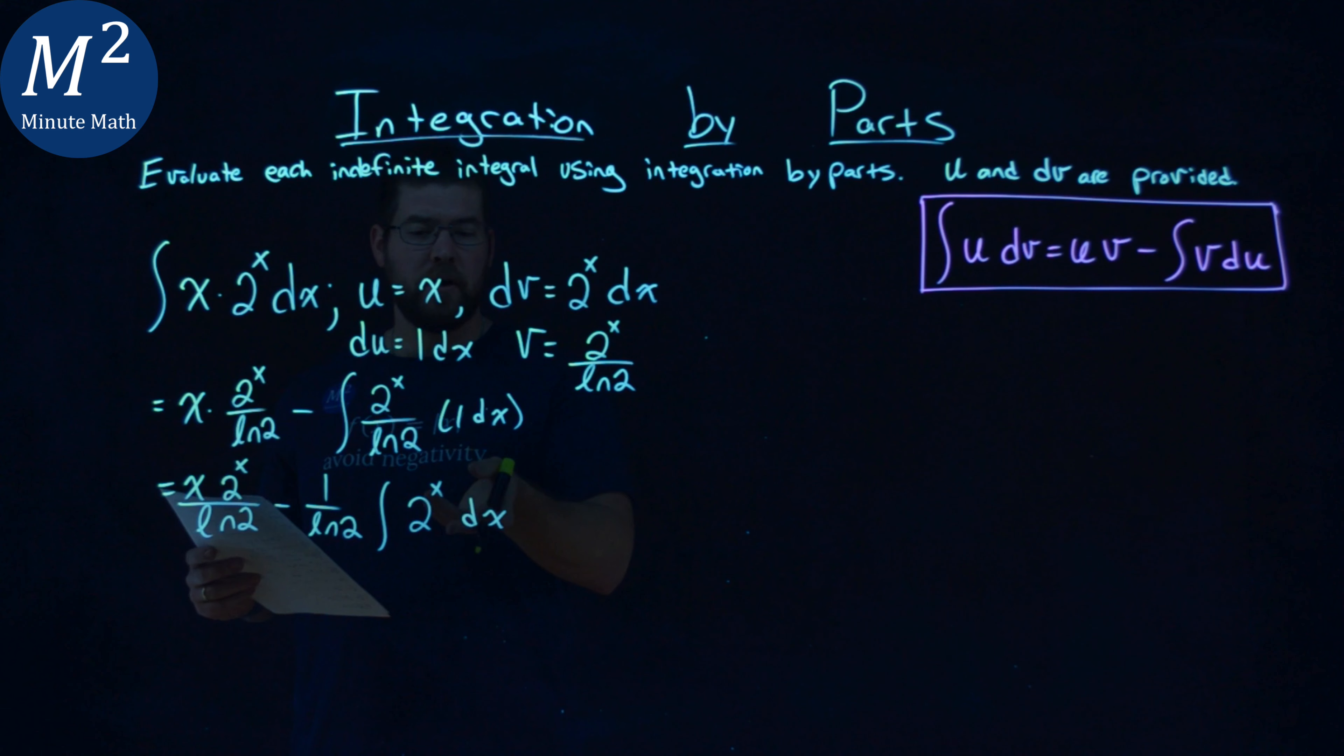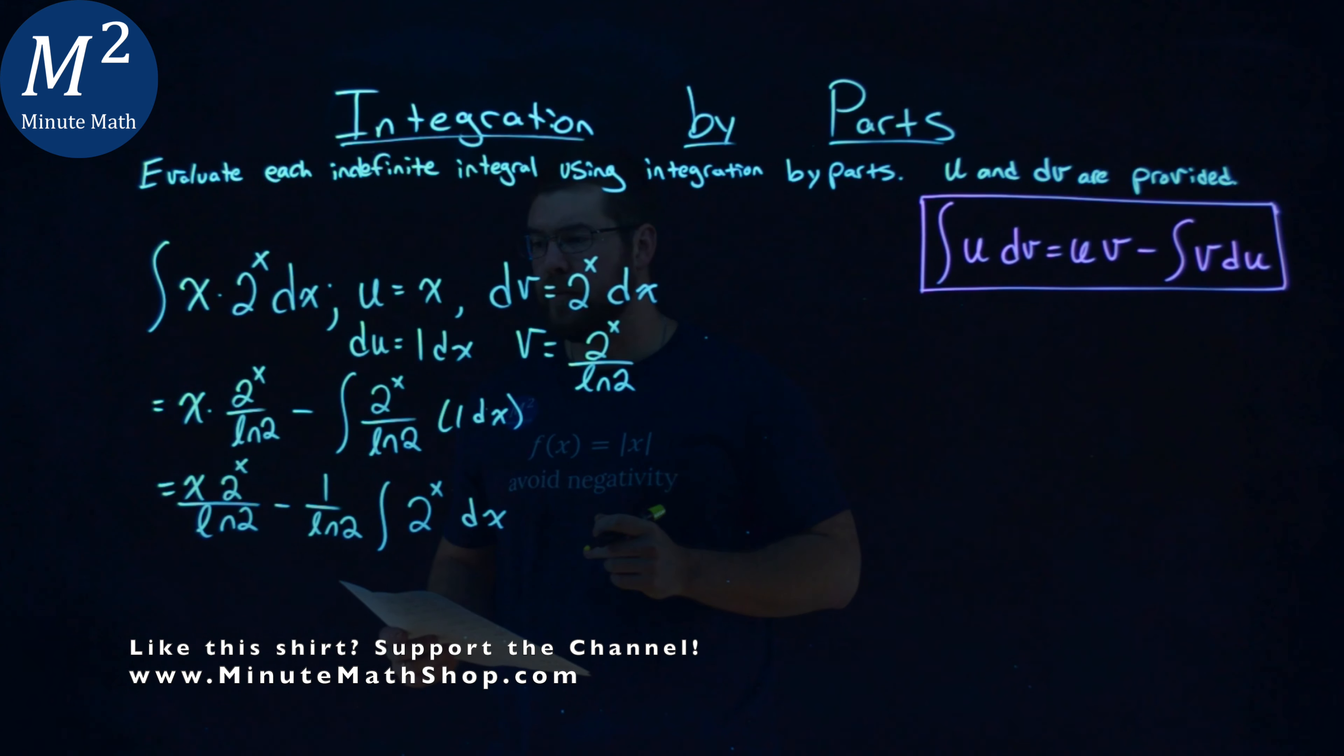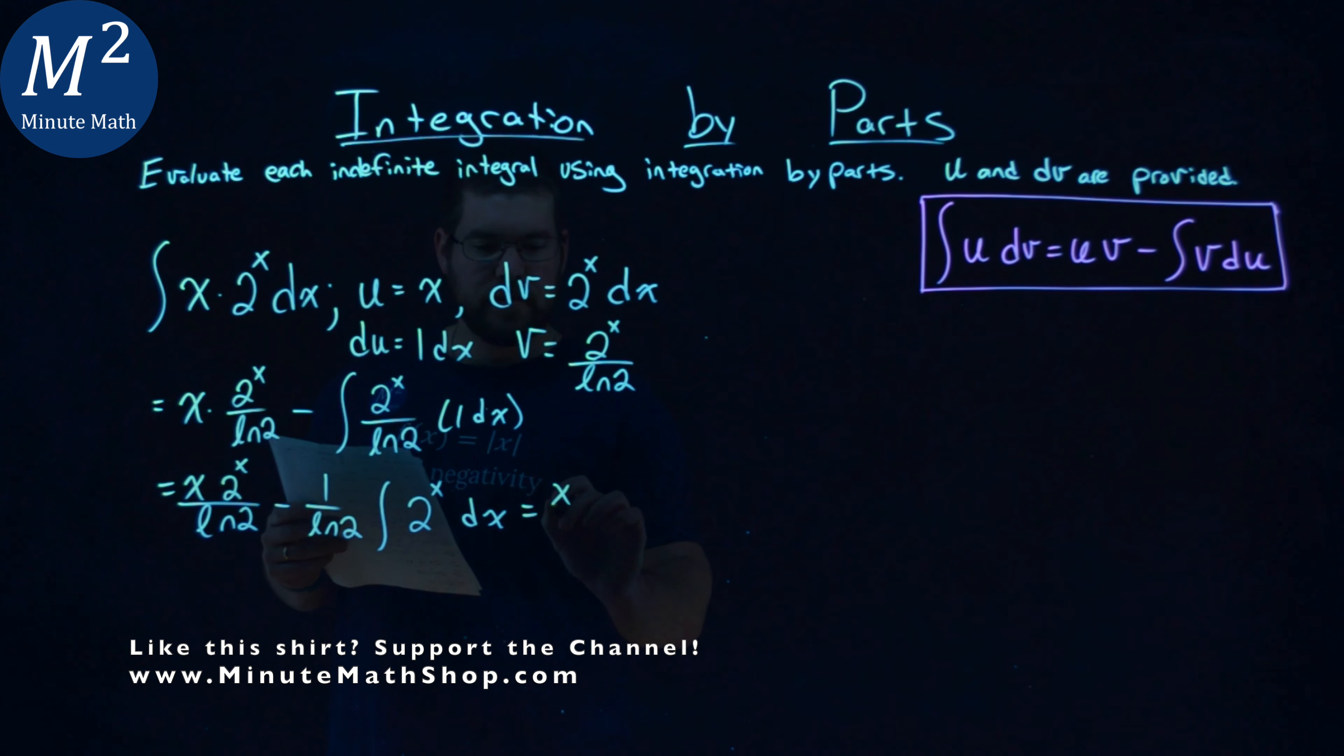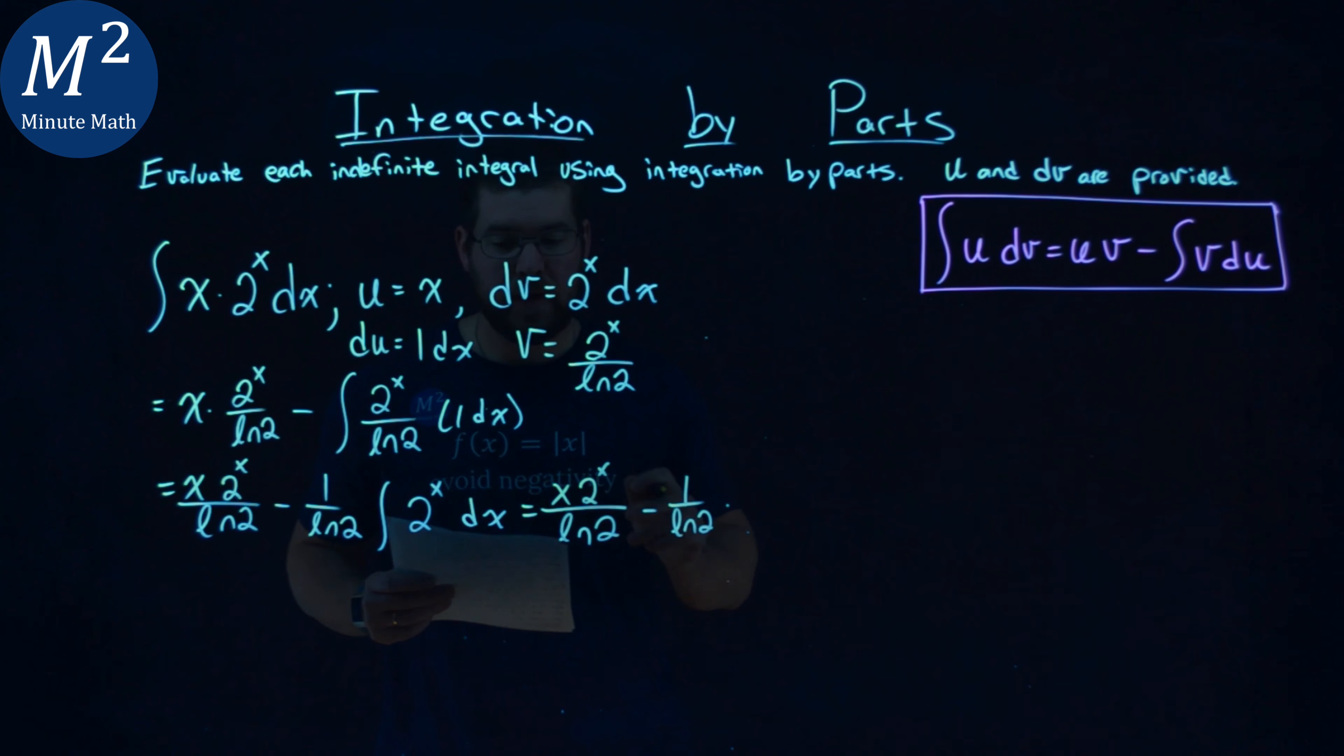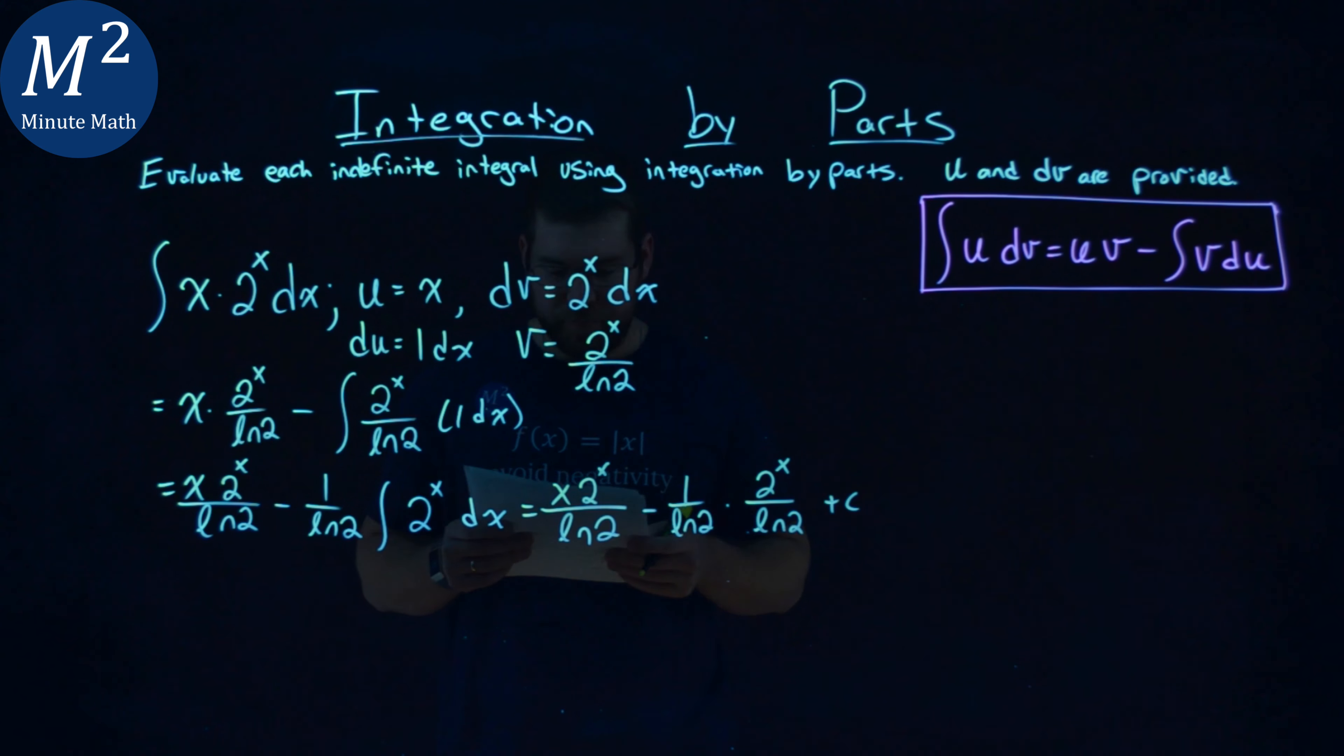Now, luckily for us, we already found what the integral of 2 to the x was. It's right here, 2 to the x over natural log of 2. So, continuing that out here, we have x times 2 to the x power over natural log of 2, minus 1 over natural log of 2 times the integral of 2 to the x dx, which we said was 2 to the x over natural log of 2. And then we have a plus c.